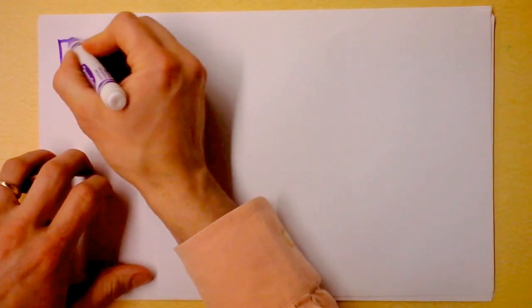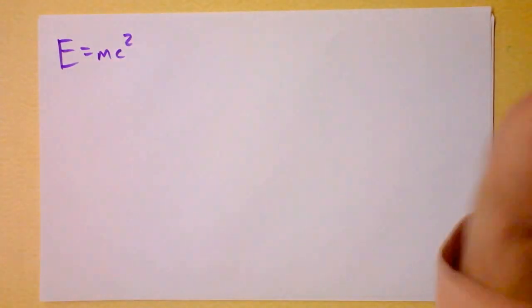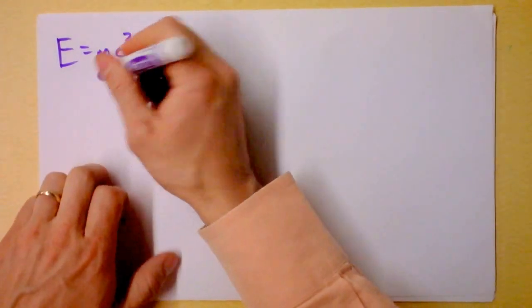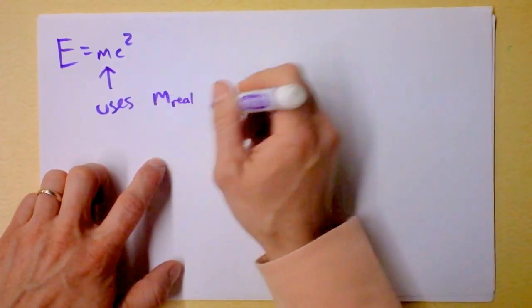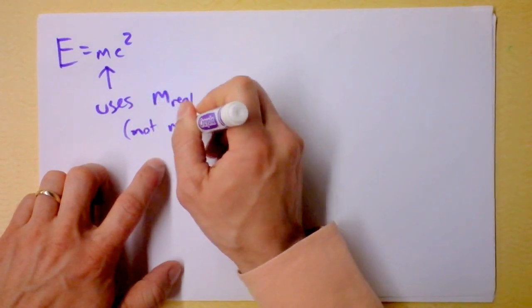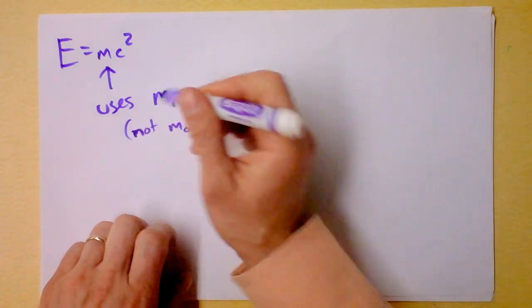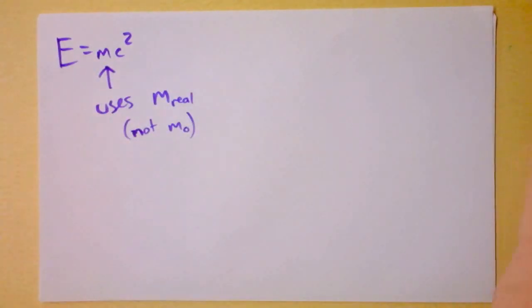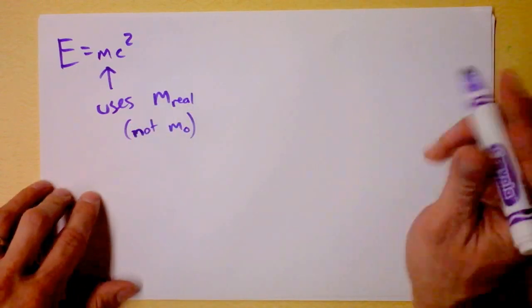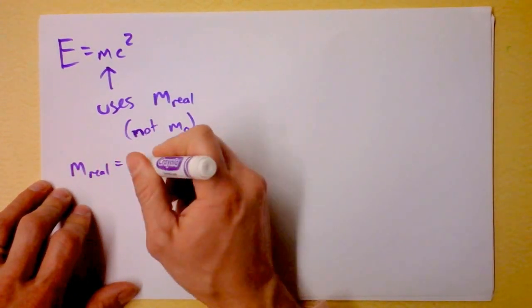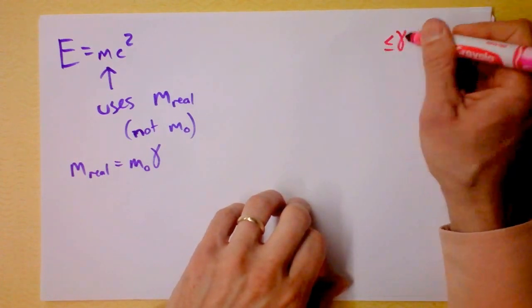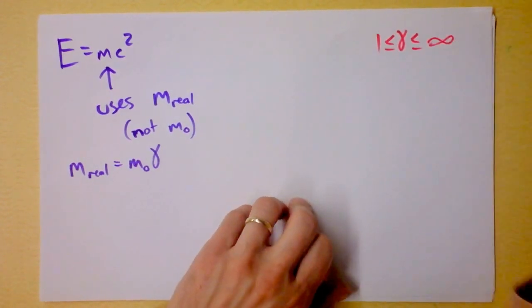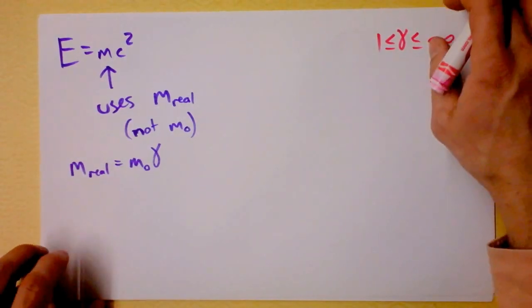I hope you've had a chance to see my video on the energy mass equivalence principle. I want to point out that this equation E=mc² actually uses real mass or relativistic mass, not m₀. M-real is m₀ times gamma. Gamma ranges from 1 to infinity, and can only be infinity if you're actually going the speed of light.